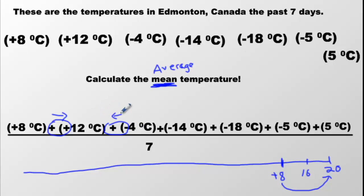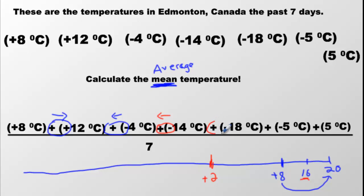I'm going to the left four times. But I'm not done yet — I still have more to do. We have a plus and a minus, which means go to the left 14 times. If I start at 16 and go left 14, I land at positive two. That's 16 minus 14 equals two. And then I still have this one: the symbols are different again, so I go to the left 18 times. I start at two and go 18 to the left. I'm going to land at negative 16.